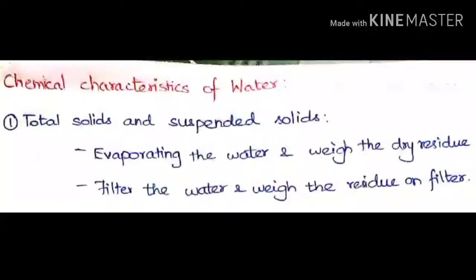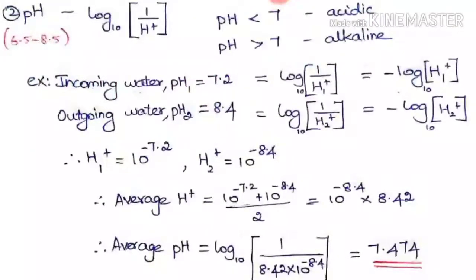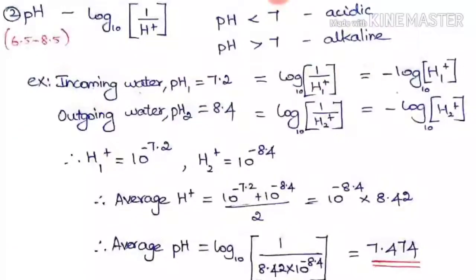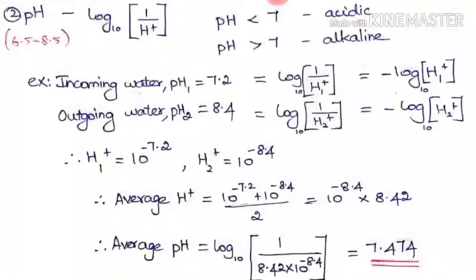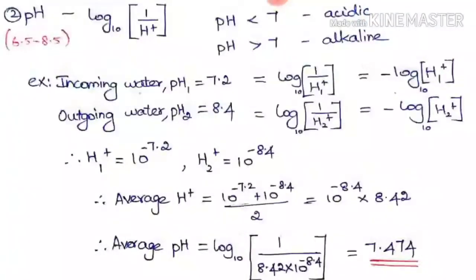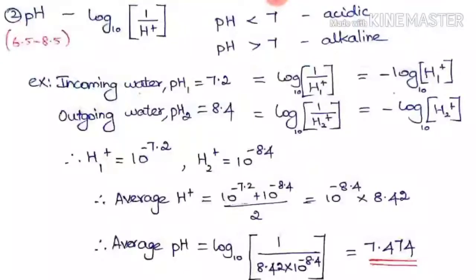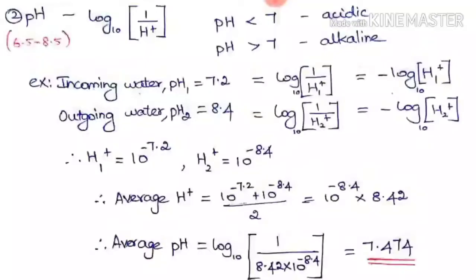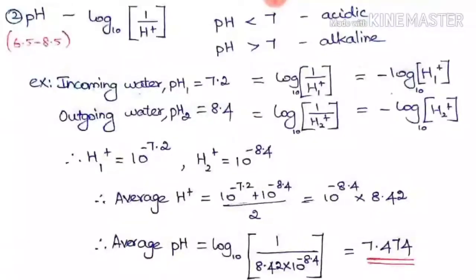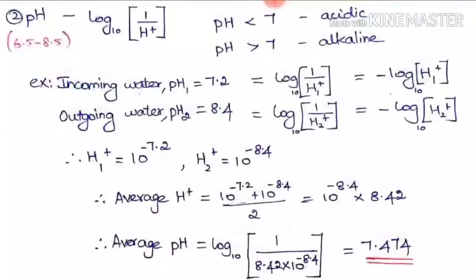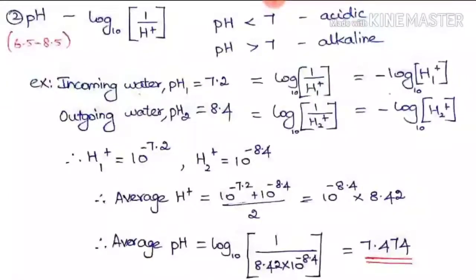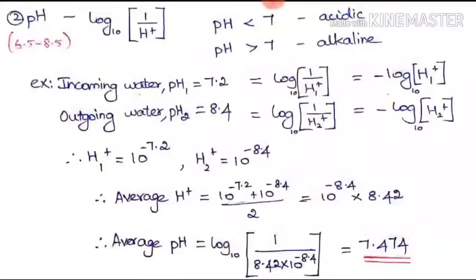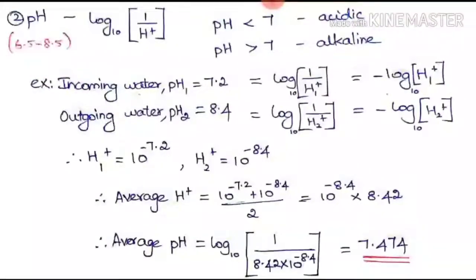The next characteristic is pH. pH is the negative logarithm of hydrogen ion concentration. If hydrogen ions are more in your water, pH will be less, and vice versa. When hydrogen ions are more, pH is less, so the water is acidic. When pH is less than 7, it is acidic; when it is greater than 7, H+ ions are very less and the solution is alkaline.